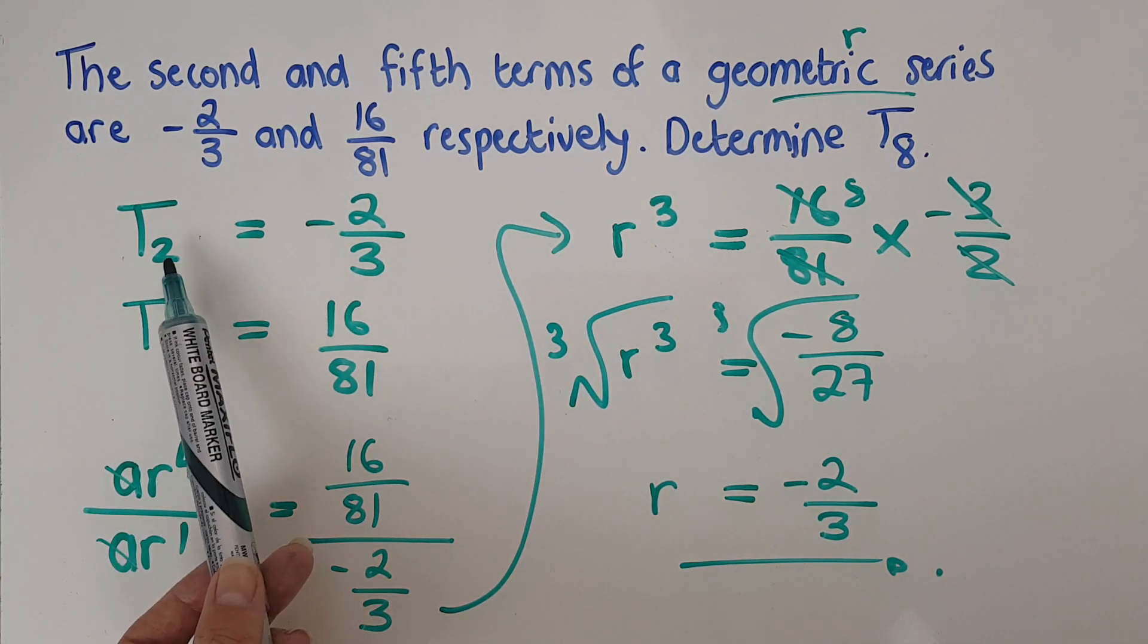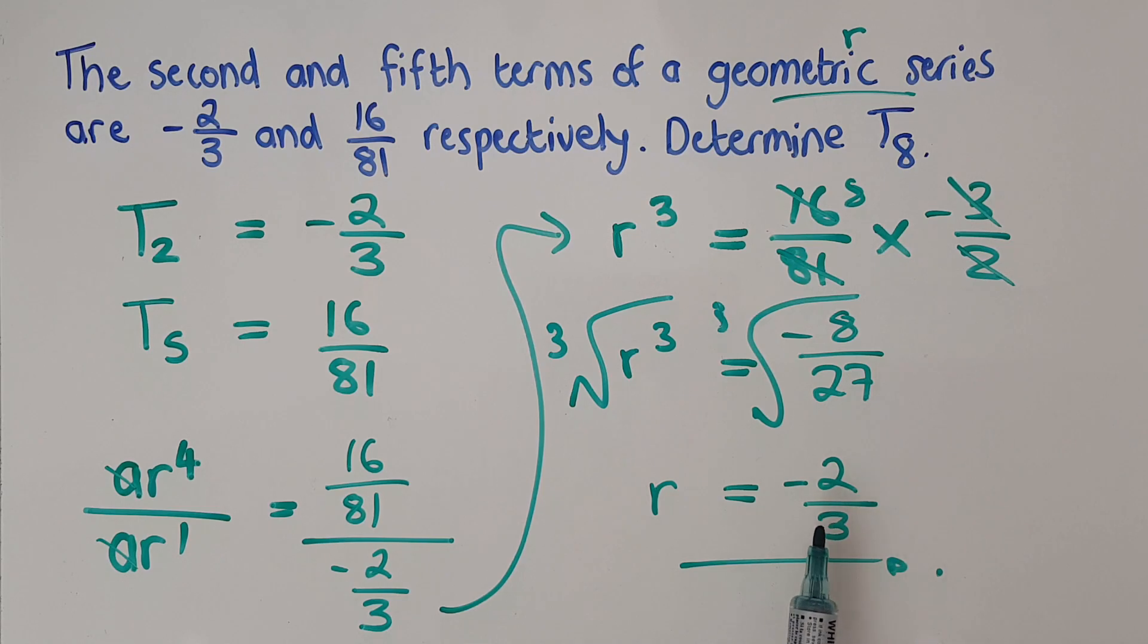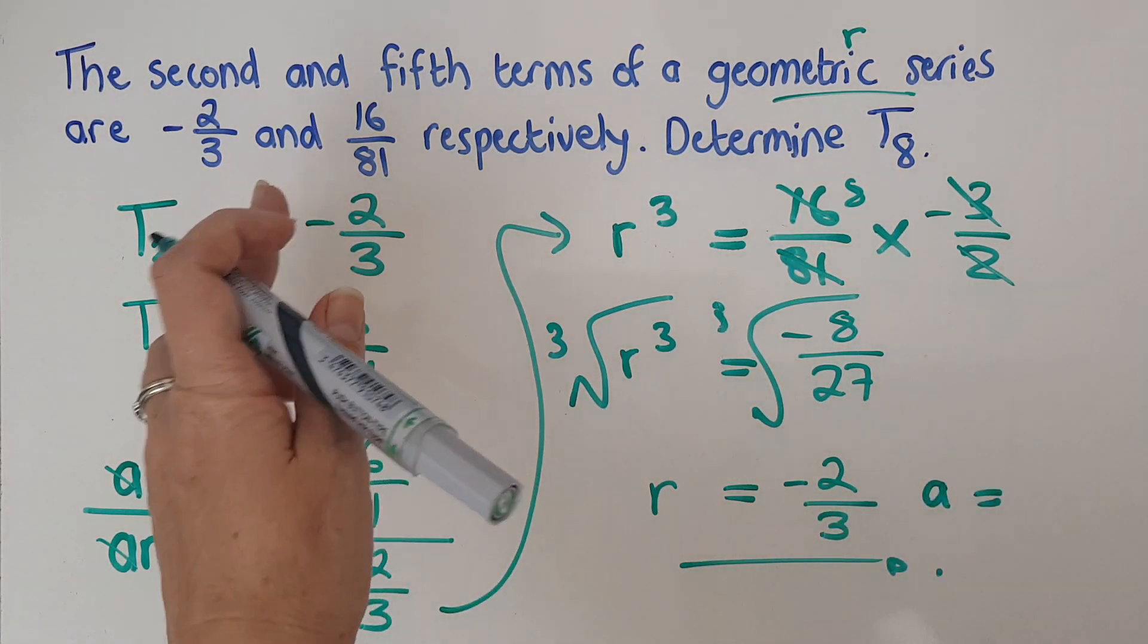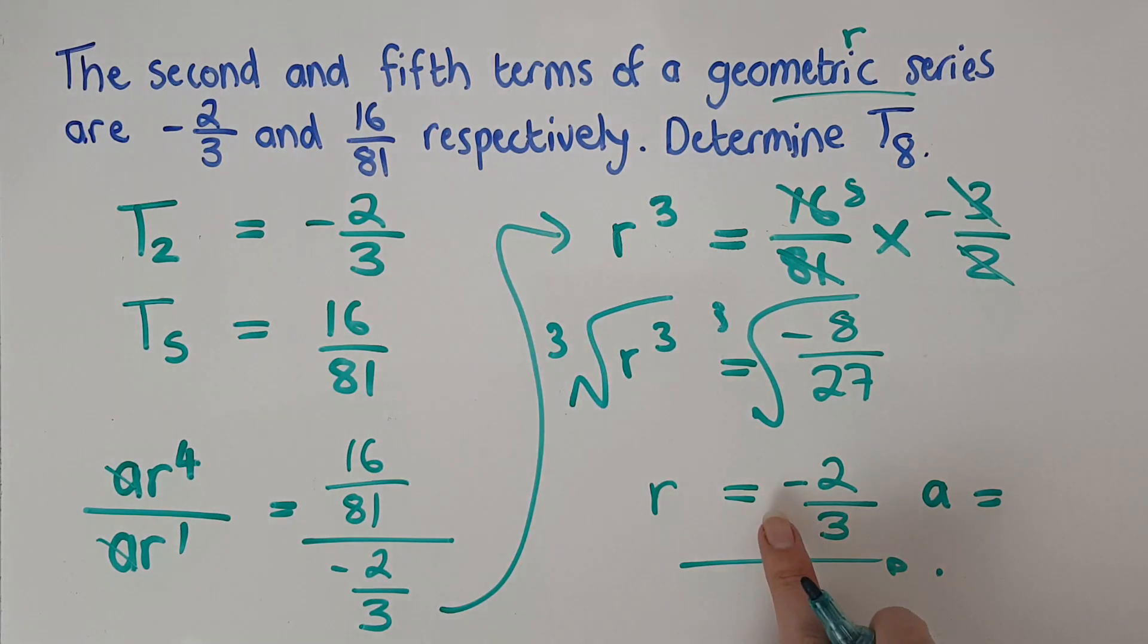What I could do is just take T2 and divide by R to get T1. So either way you do it, that's fine. Or I can sub back into one of these equations and get A out. But I think it's quite obvious that A is one. So I've got A as one because negative two thirds divided by negative, that negative two thirds divided by this negative two thirds gives me one.